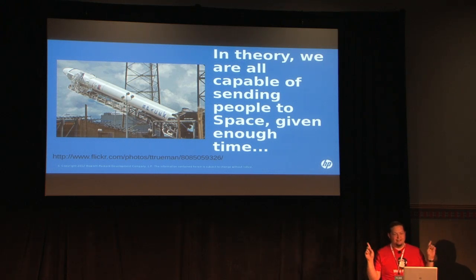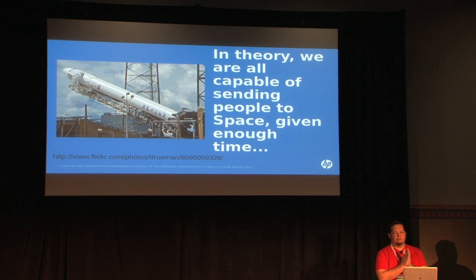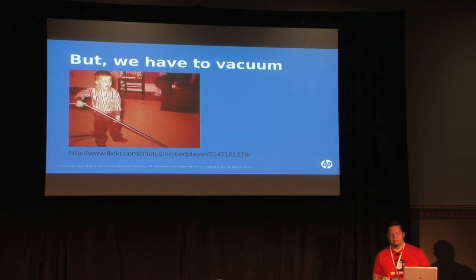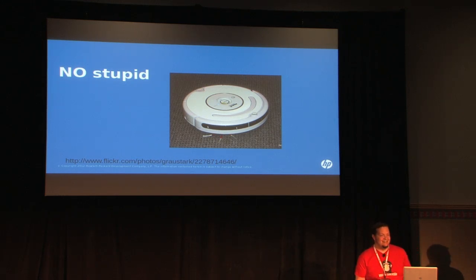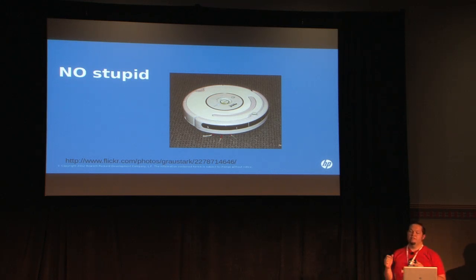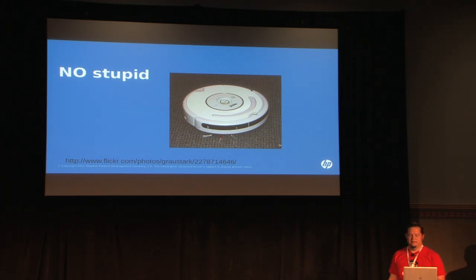In theory, all of us here, even the least educated, given enough time and education, could send someone into space. We could do whatever we set our minds to — at least that's what they told us in the after-school specials. But we have to vacuum; we have to spend our time. What if you had an iRobot? We should automate more. The vacuum cleaner is a better version of the broom, but we really need to automate. Automate all the things — it's important.